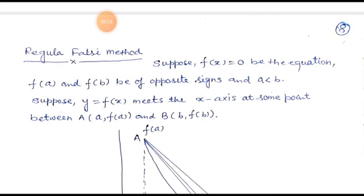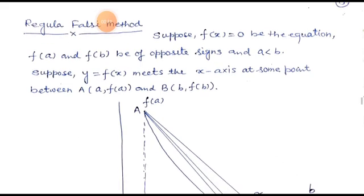The session today is the Regula Falsi Method, or Method of False Position. This is another method for finding the solution of an equation, or finding the root of an equation. Suppose f(x) = 0 is an equation, and f(a) and f(b) have two opposite signs.